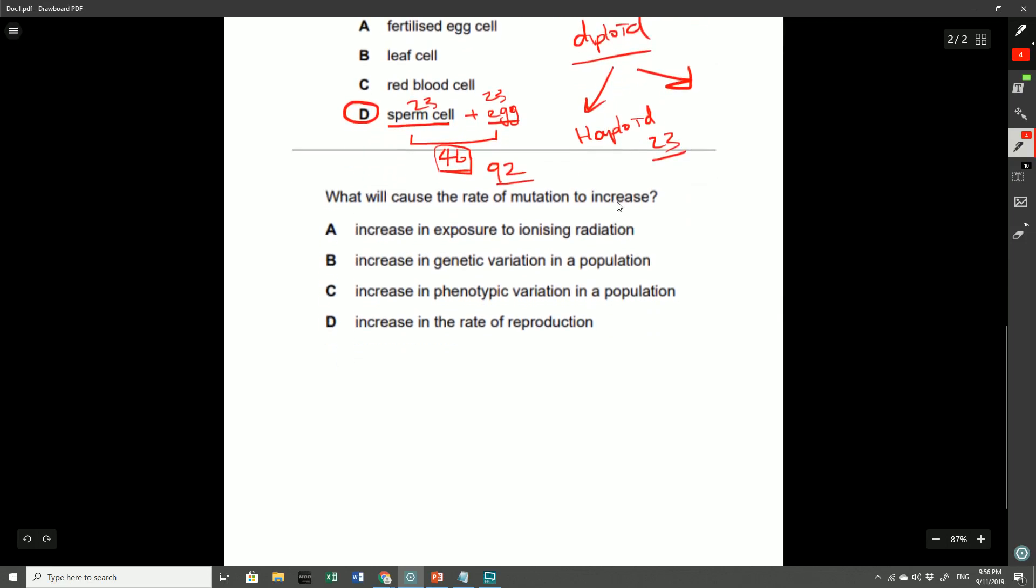This last question: what will cause the rate of mutation to increase? A lot of people weren't aware that an increase in exposure to ionizing radiation increases the chance of mutation. Remember, mutation is simply the change in DNA base sequence. Whatever it is, it causes some sort of change in the DNA for the better or worse. Because there's a change in the DNA, it can introduce genetic variation in the population.